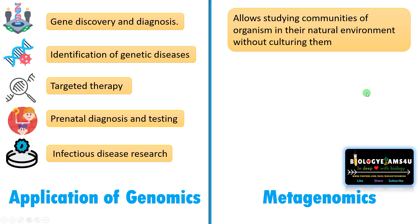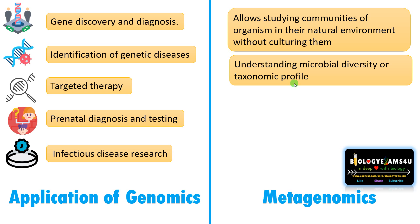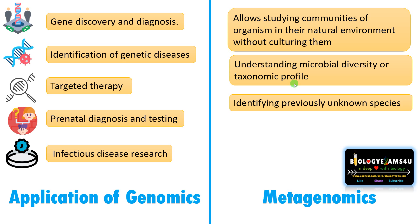Since the majority of microbes cannot be cultured easily, metagenomics bypasses the need for culturing microorganisms. It helps to understand microbial diversity and enables taxonomic profiling of a sample. During taxonomic profiling, previously unknown species can be identified.